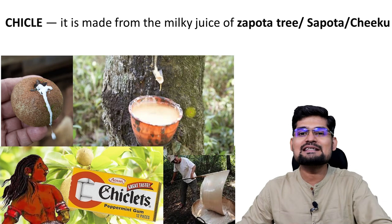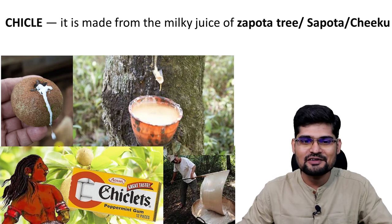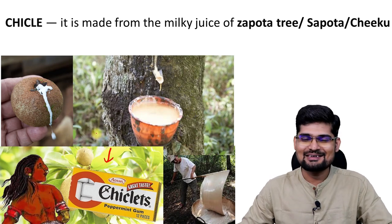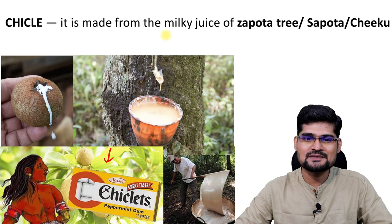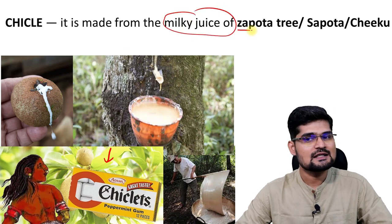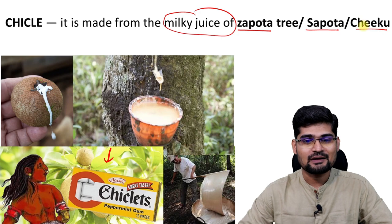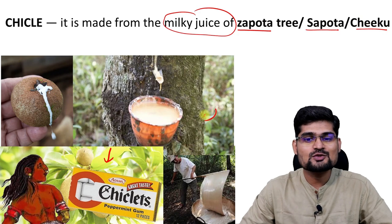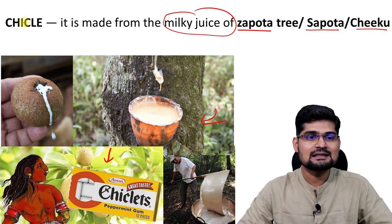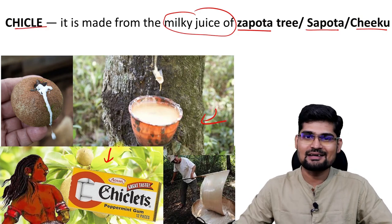One example from almost everyday life: if you are fond of eating chiclets or chewing gums, they are made from the milky juice of the Zapota tree — also called Zapota or Chiku. So this is one example you can quote here — the chicle or chiclets.